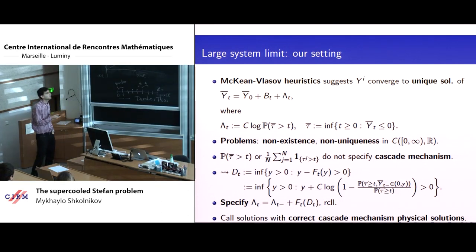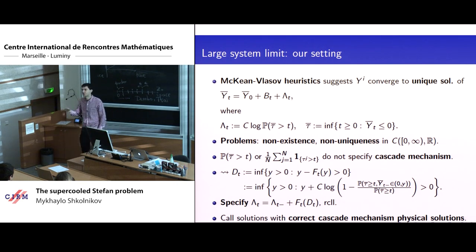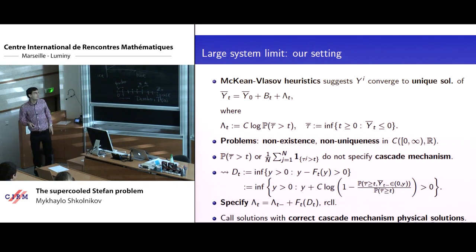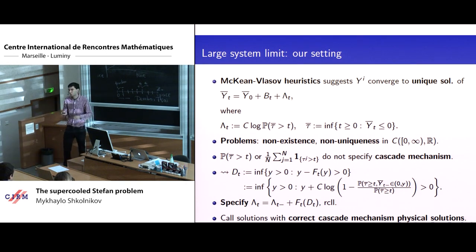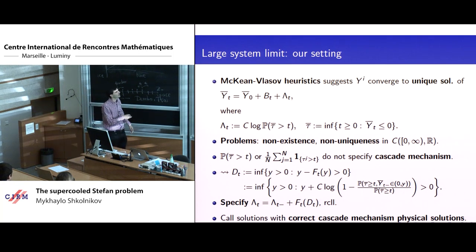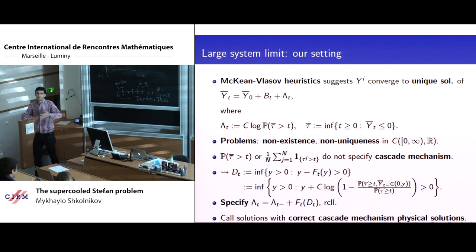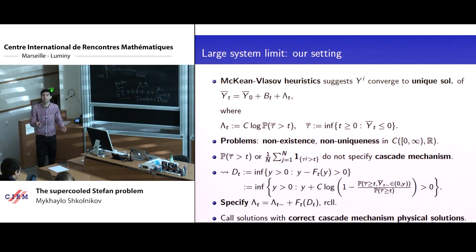As a probabilist, there is no significant issue here — you couldn't find a continuous solution, so we go to our favorite Skorokhod space D instead of the space of continuous functions C. Indeed, you can hope to find a solution in the Skorokhod space — functions that are right-continuous with left limits. But then you run into a non-uniqueness problem: once you allow for these discontinuous functions capital Lambda, there are actually multiple solutions for the same initial condition.